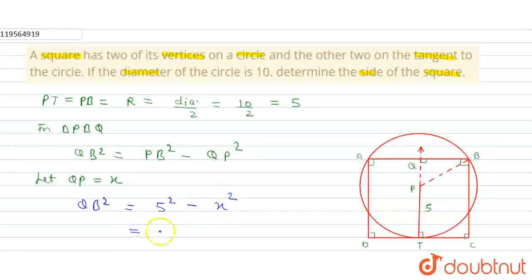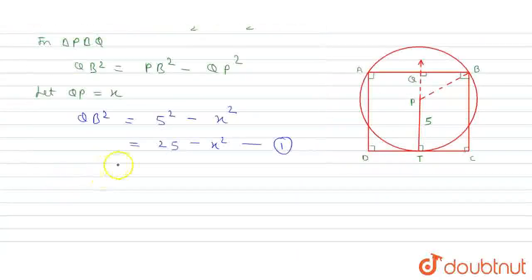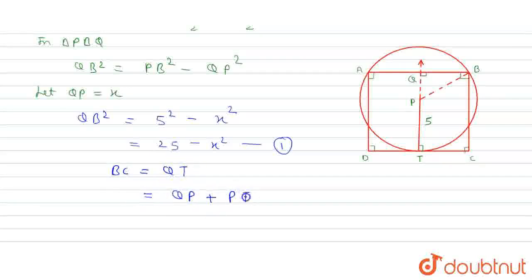That becomes x². So 5 square is 25 minus x square, which equals 25 minus x². This is our equation number 1. In the figure we can write that BC is equal to QT, and QT we can write as QP plus PT. QP we have considered as x and PT is 5. So this is our equation number 2.